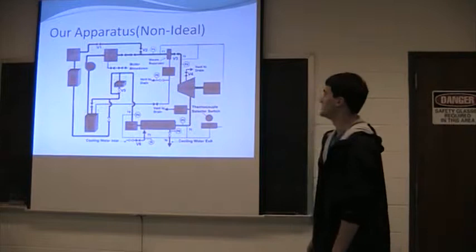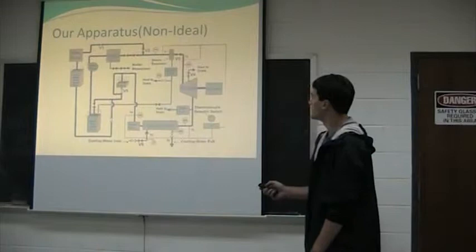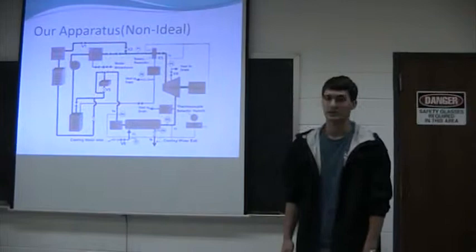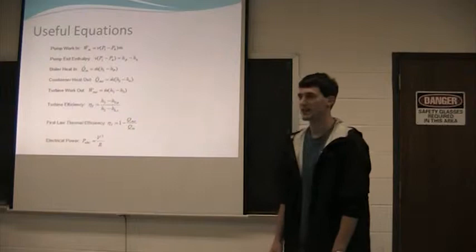This is our apparatus. You can see it is very large compared to ideal. However, four main components are still there: the pump, the boiler, the turbine, and the condenser. And then we collected pressure and temperature data throughout the apparatus, and we used these values in our calculations to produce the results.